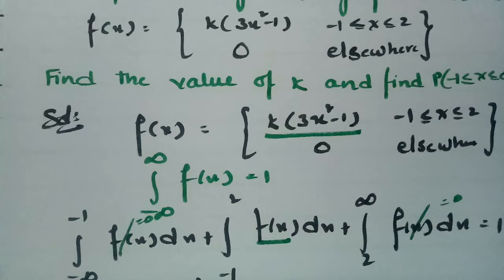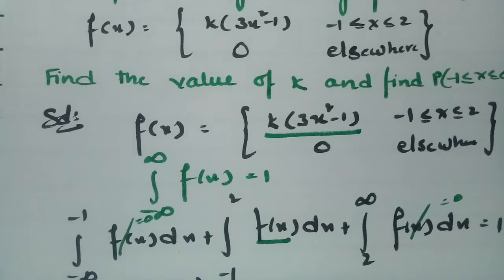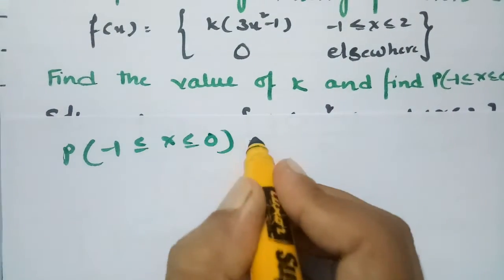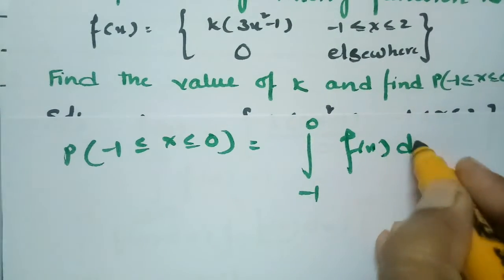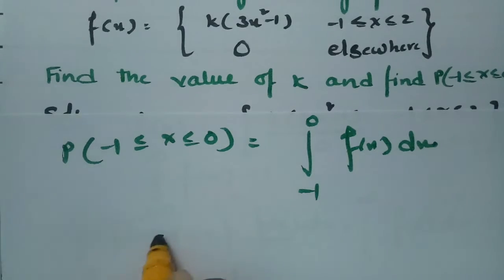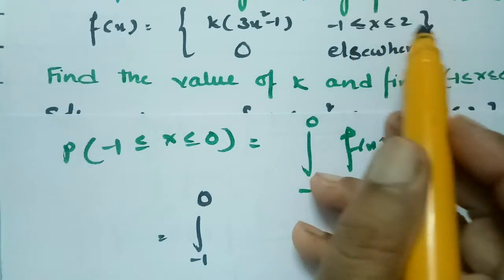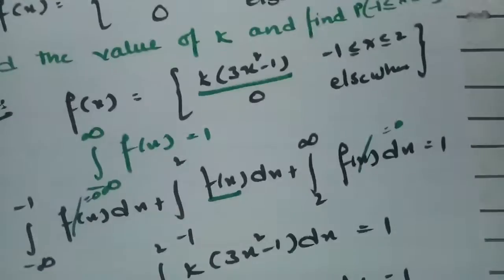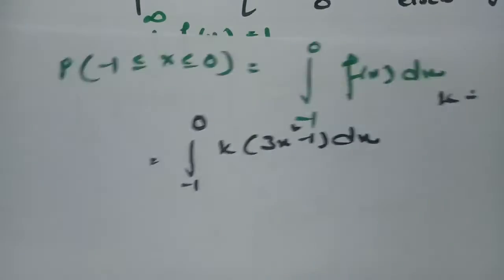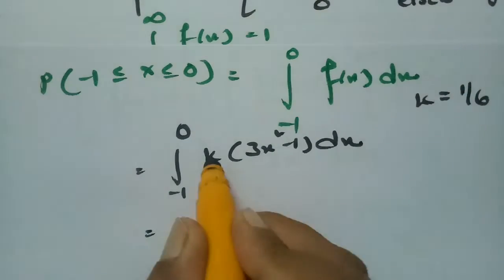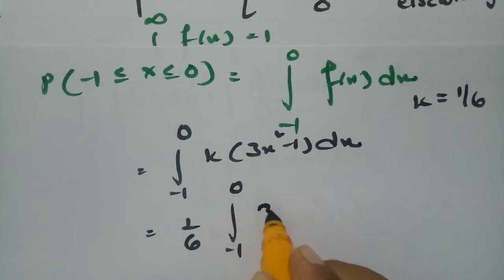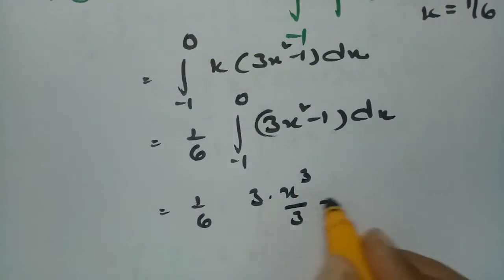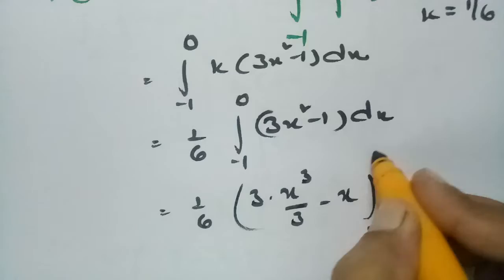Next, we find the probability when x lies between -1 and 0. This is the integral from -1 to 0 of f(x)dx. Since x lies in [-1, 0], which is within [-1, 2], f(x) = k(3x² - 1). Substituting k = 1/6, this becomes (1/6) times the integral from -1 to 0 of (3x² - 1)dx. Integrating: (1/6) times [x³ - x] evaluated from -1 to 0.